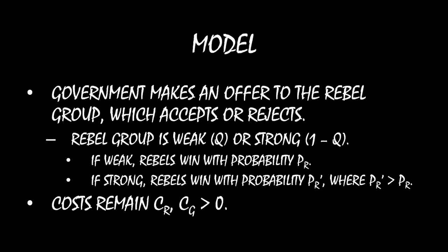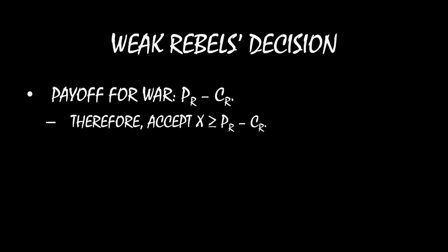The way to solve this is to start at the end and work backward. We can focus on what happens if you're a rebel group — you need to figure out what to do if you're strong and what to do if you're weak. Starting with the weak rebel's decision: your payoff for war is PR minus CR. So if you're receiving an offer X greater than or equal to PR minus CR, you are willing to accept. You're going to reject anything less than that because you can get more from war. So the weak rebel accepts if X is greater than or equal to PR minus CR, and rejects otherwise.